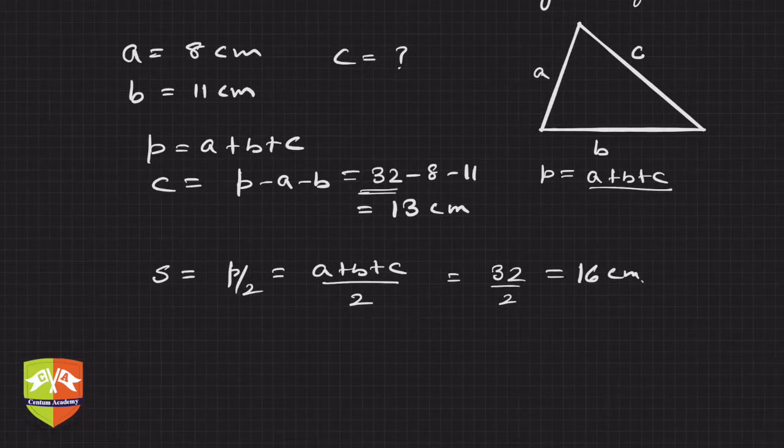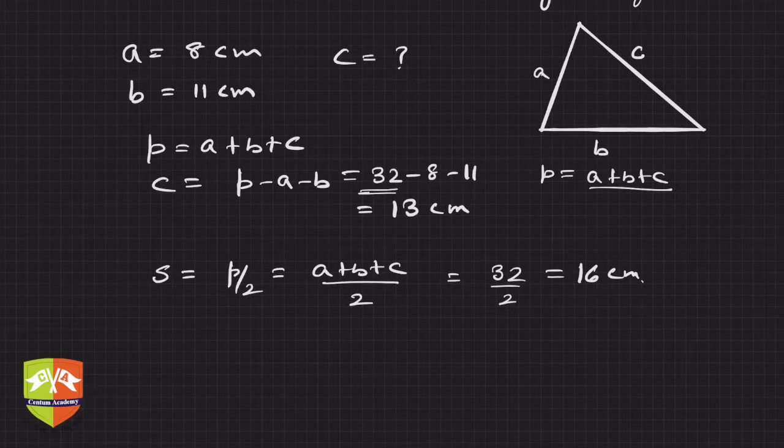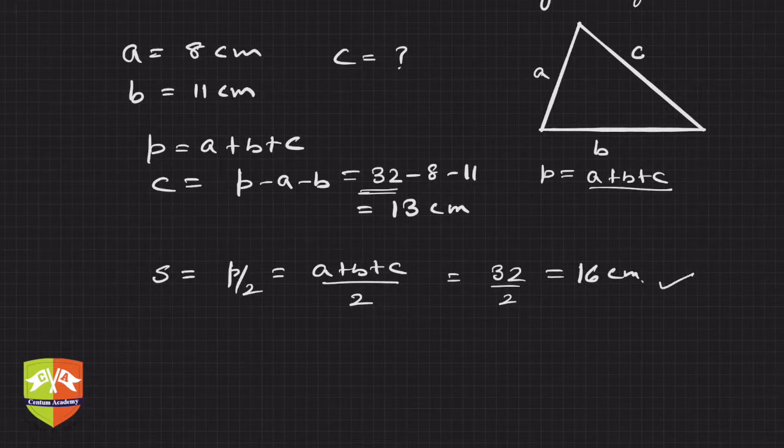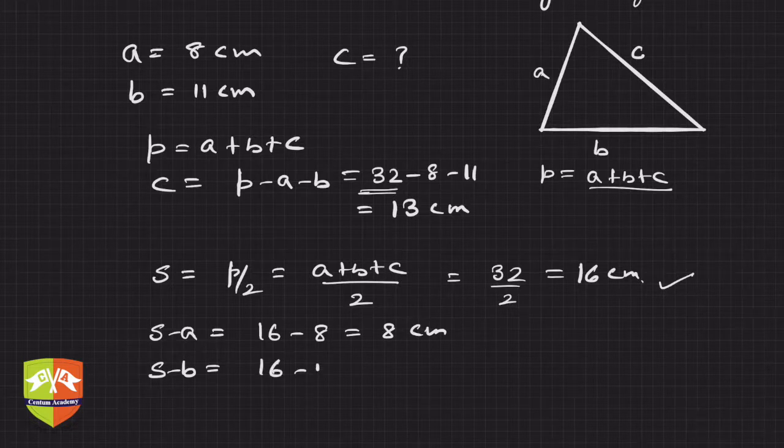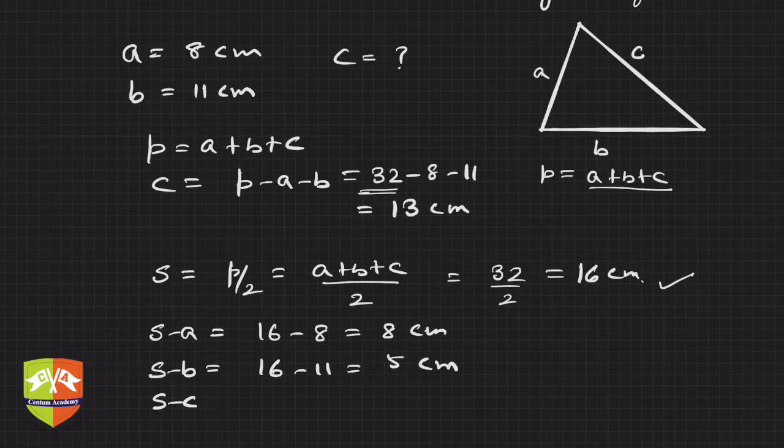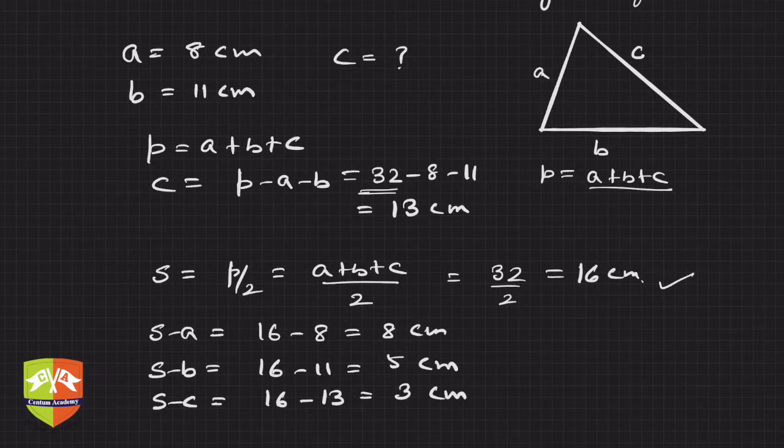Now before you find out the area, it's better to find out all the values separately. So s is now known. Now let's find out s minus a. So s minus a is 16 minus 8 which is 8 centimeter. S minus b is 16 minus 11 which is 5 centimeter, and s minus c is 16 minus 13 which is 3 centimeter.